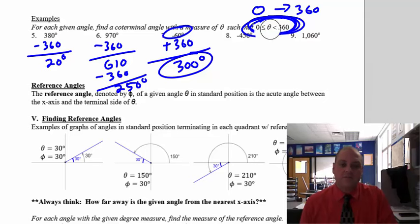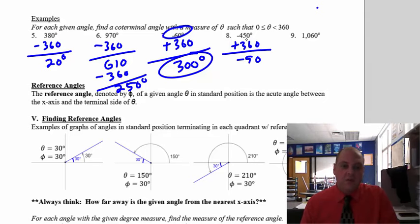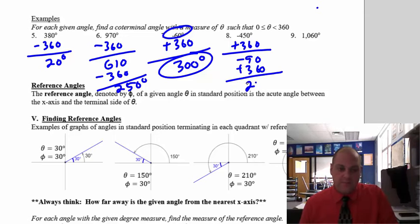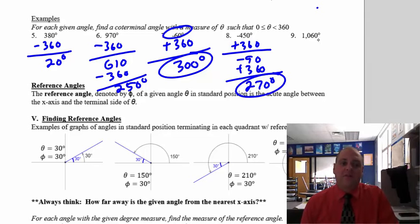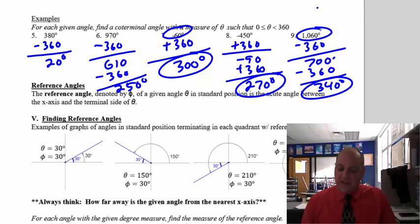For negative 450, add 360 to get negative 90, then add 360 again to get 270. You have to add 360 twice to get between 0 and 360. For 1060, subtract 360 to get 700, then subtract 360 again to get 340. So 340 and 1060 are the exact same angle.